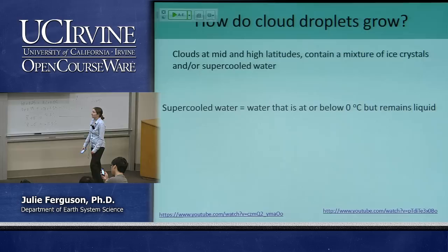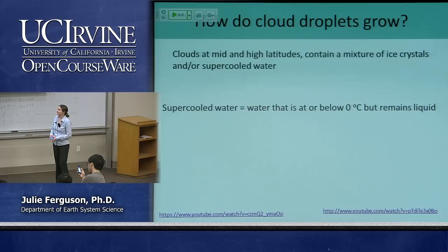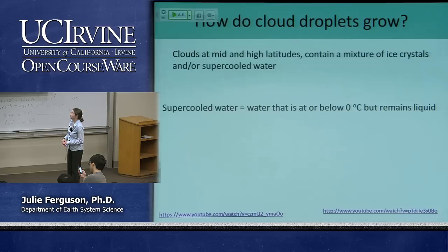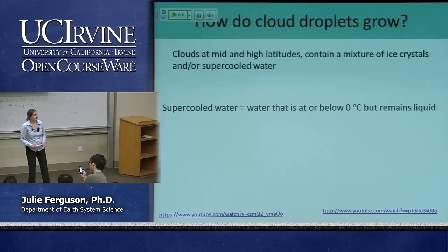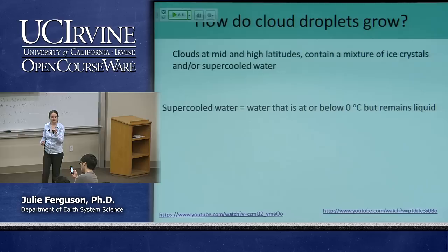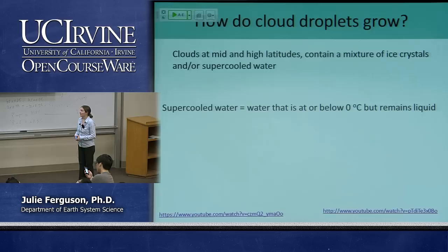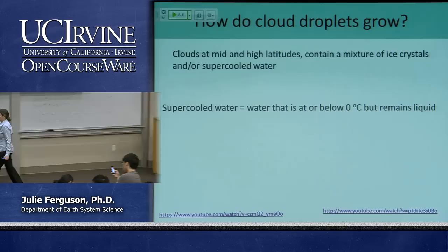Clouds at mid to high latitudes are actually made up of a mixture of ice crystals and what we call supercooled water — water that's below zero degrees Celsius but hasn't frozen yet. This is usually because the air is so pure there aren't any nuclei for ice to form on, since ice requires something more six-sided to nucleate onto, or the water molecules just need to be nudged to line up in order to form that ice structure.